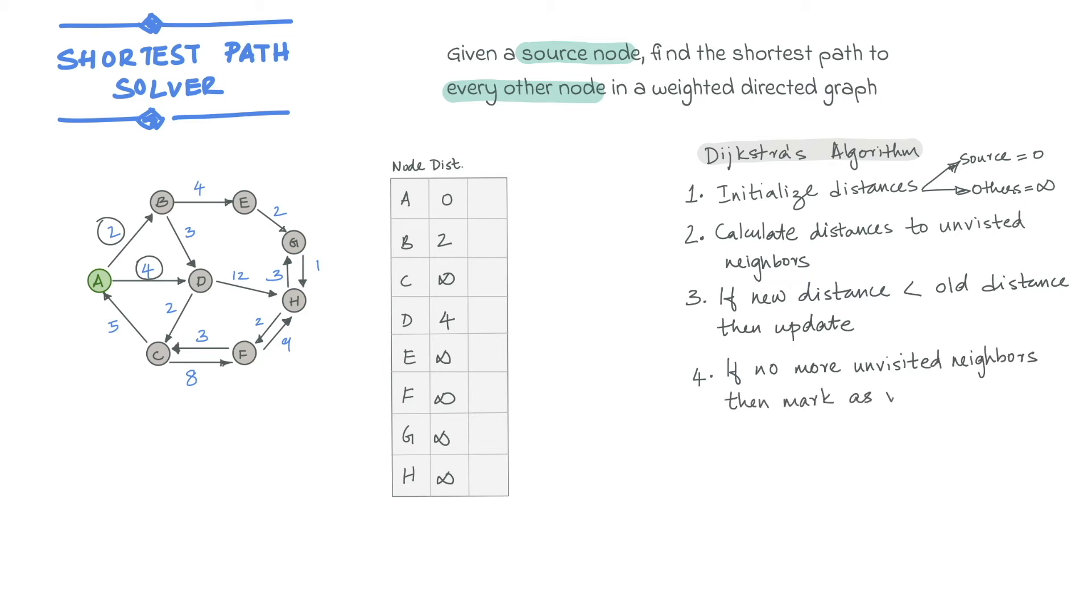Once we are done visiting all the neighboring nodes, we can mark the current node as visited. Let's also mark the current best predecessor node for B and D, which for both of these is currently A.